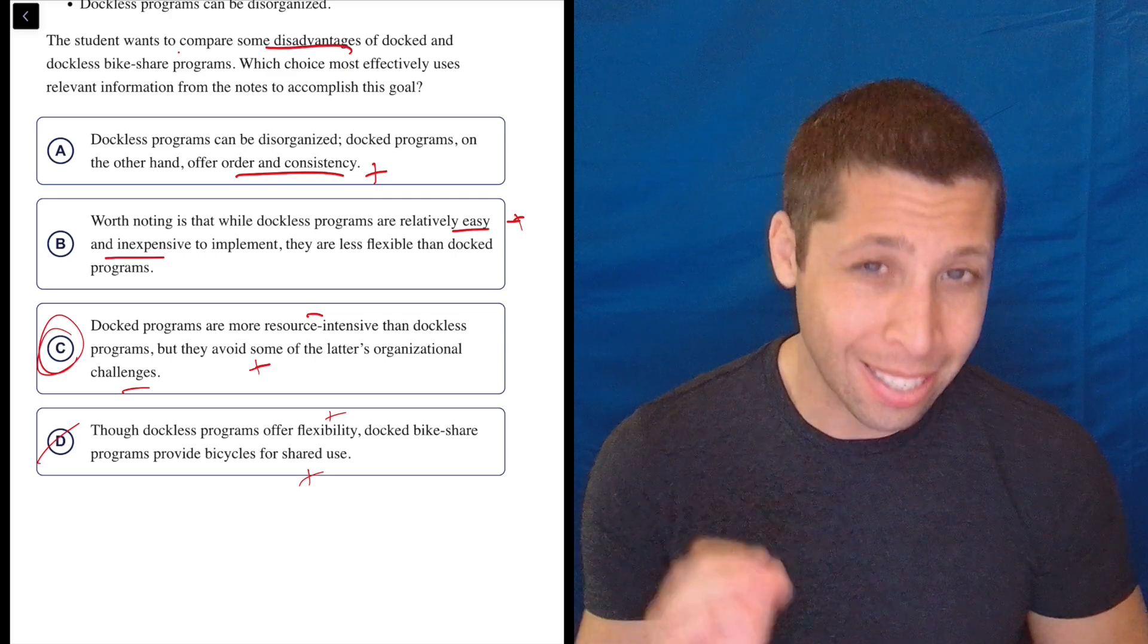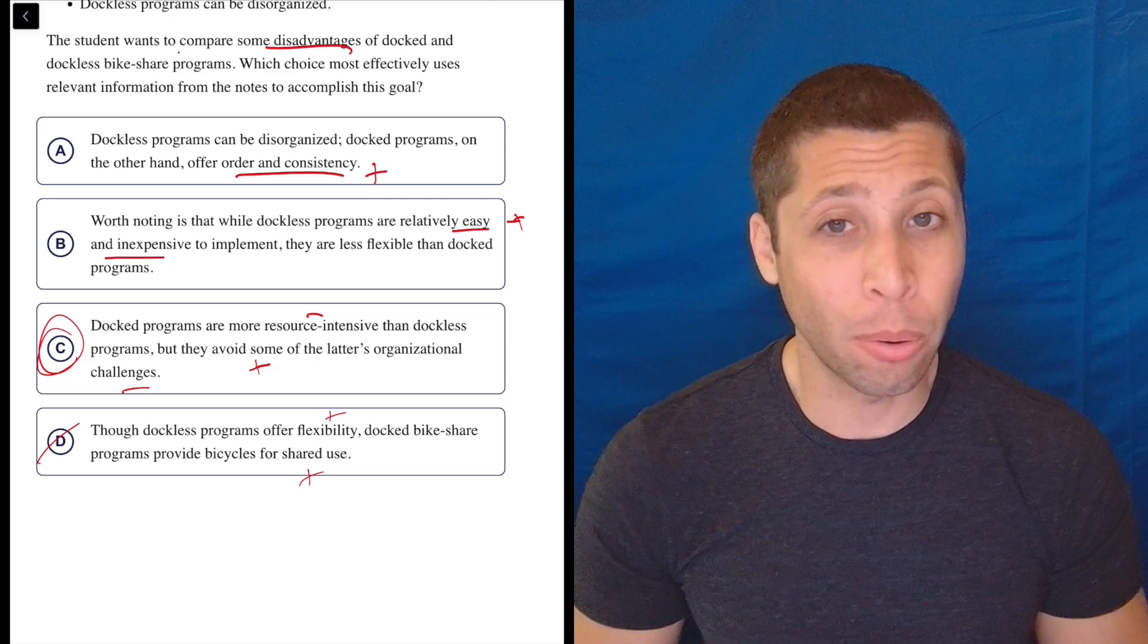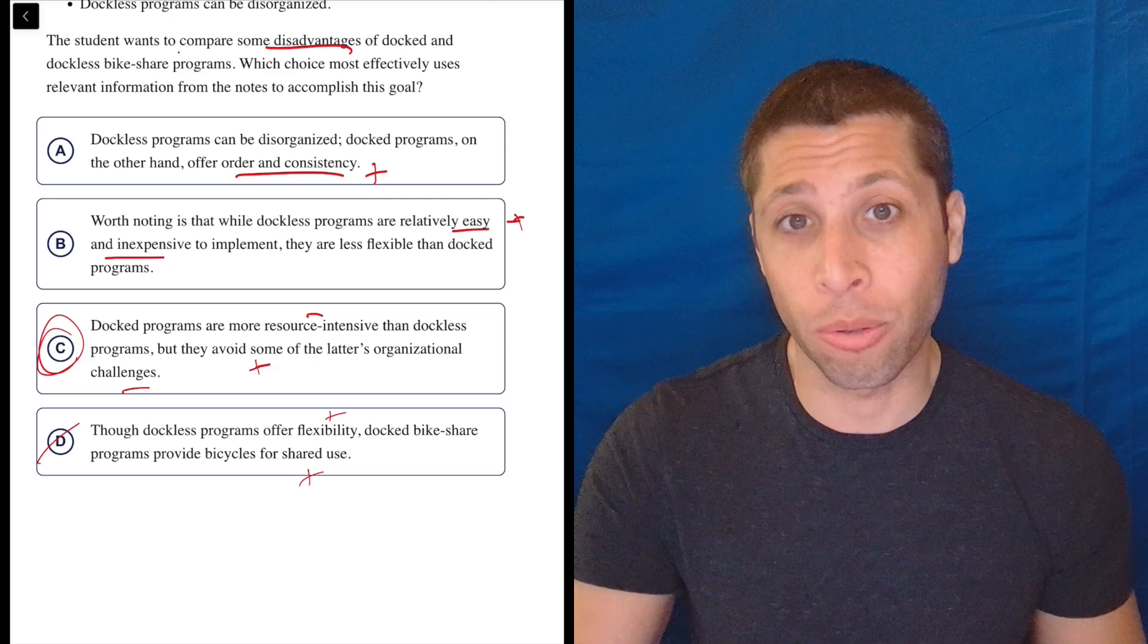So this is why reading the goal and understanding it exactly is really important because I wouldn't have to reread anything here. I would know that C is right and I'd be able to move on.